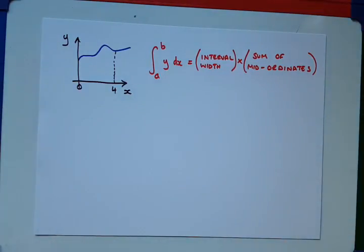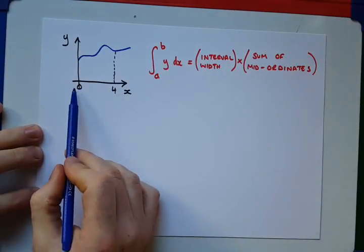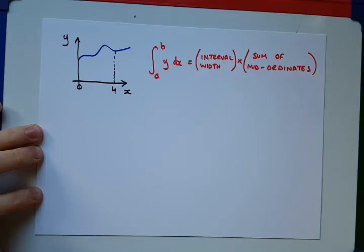Okay, so there's a couple of values in this, or a couple of terms that we need to identify. First of all, interval width, what does that mean? So, the mid-ordinate rule, what we do is we take the area that we need to split up, or the area that we need to find under the curve, and we split it up into equal intervals. It's very important that they're equal intervals.